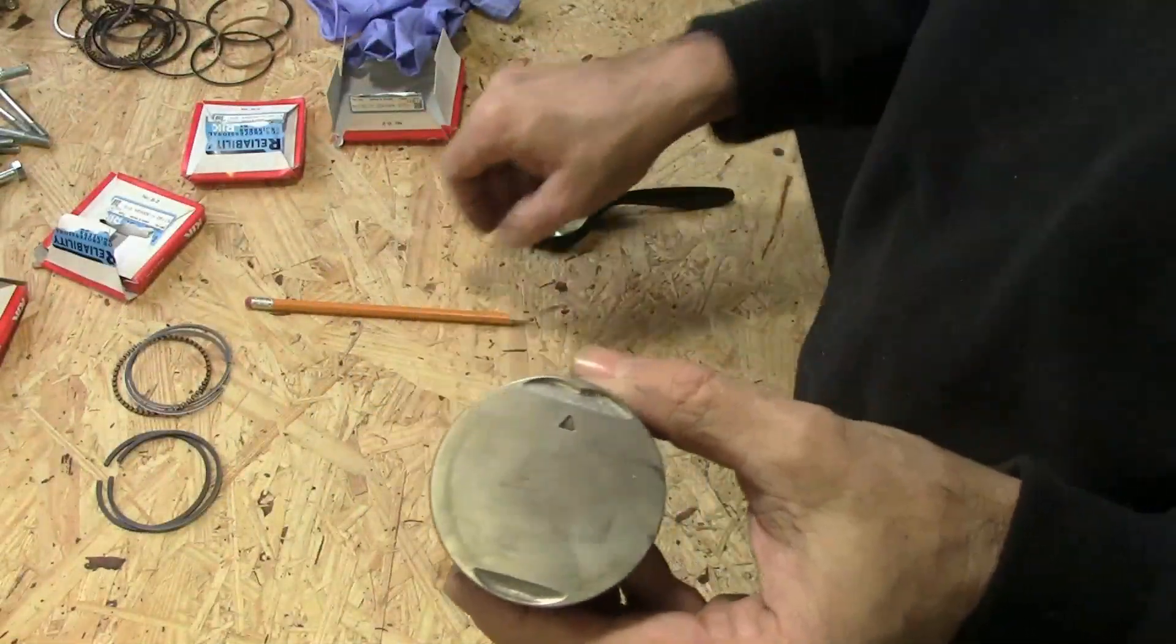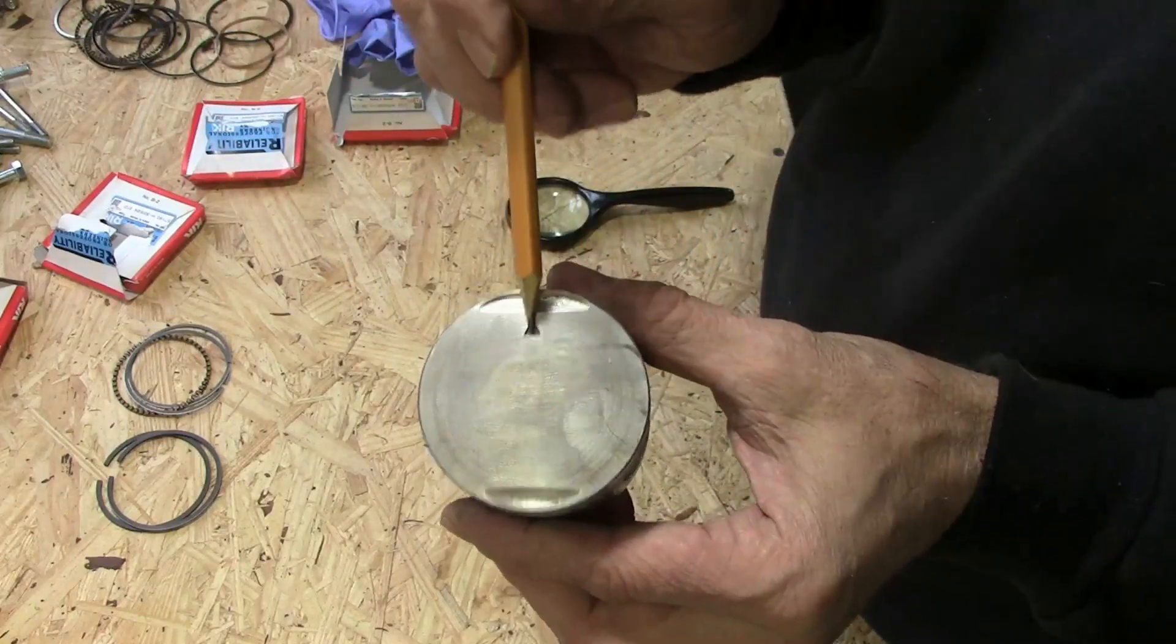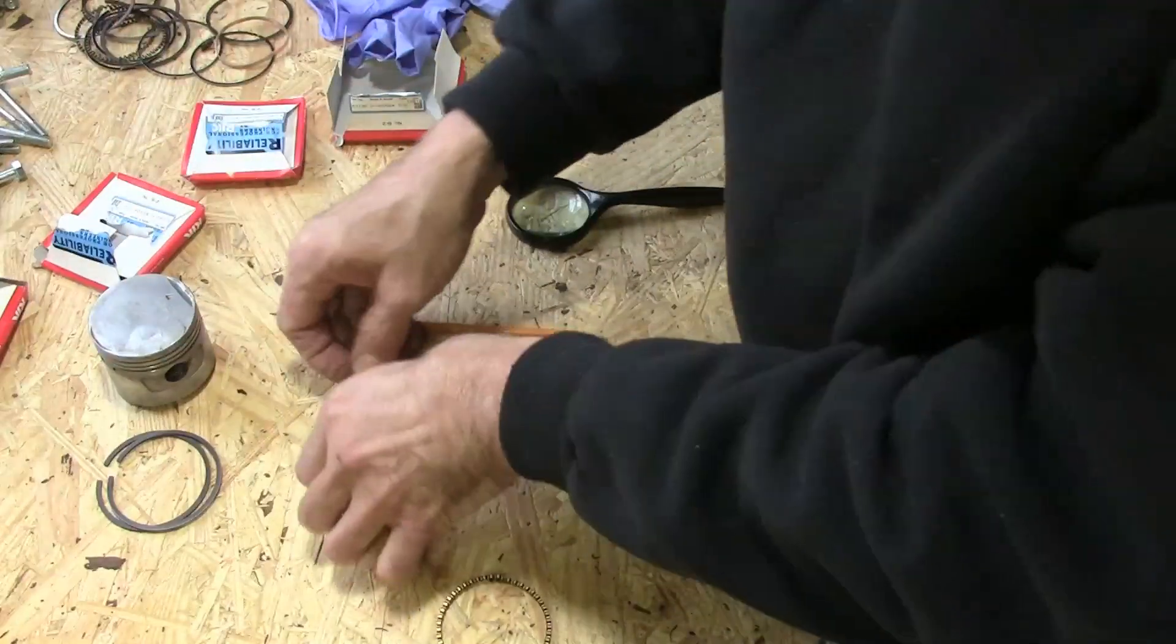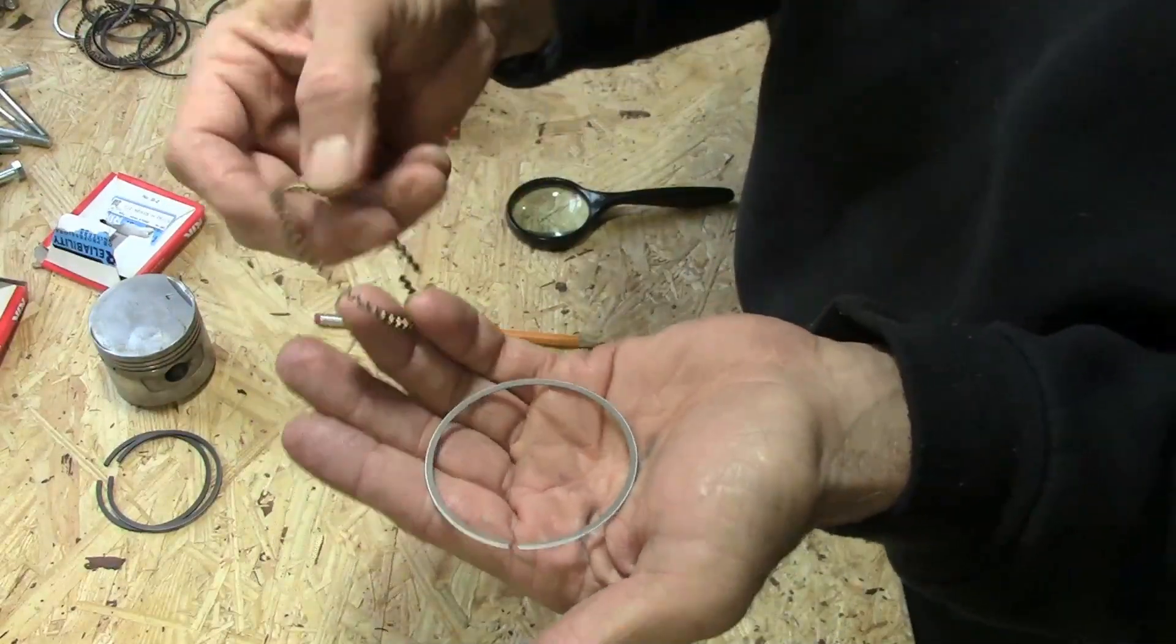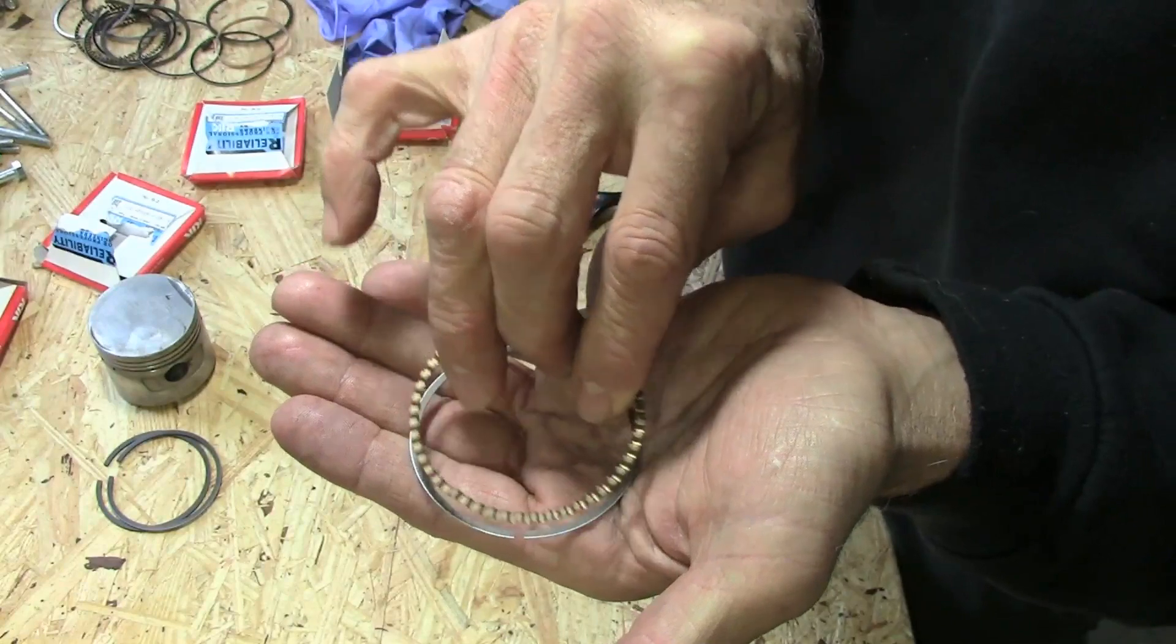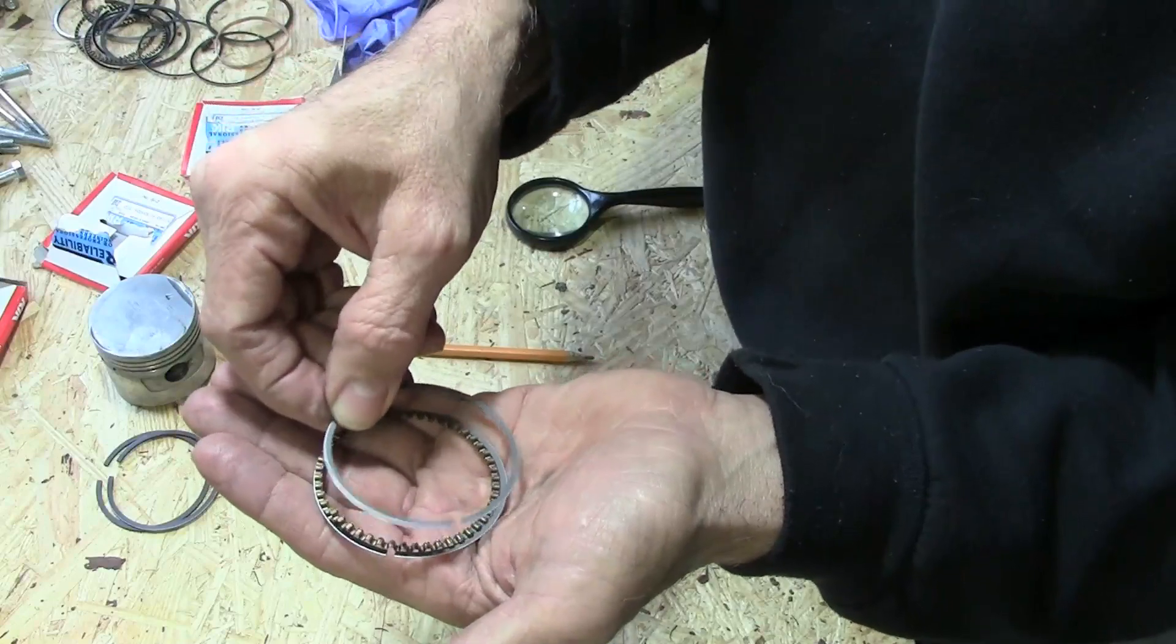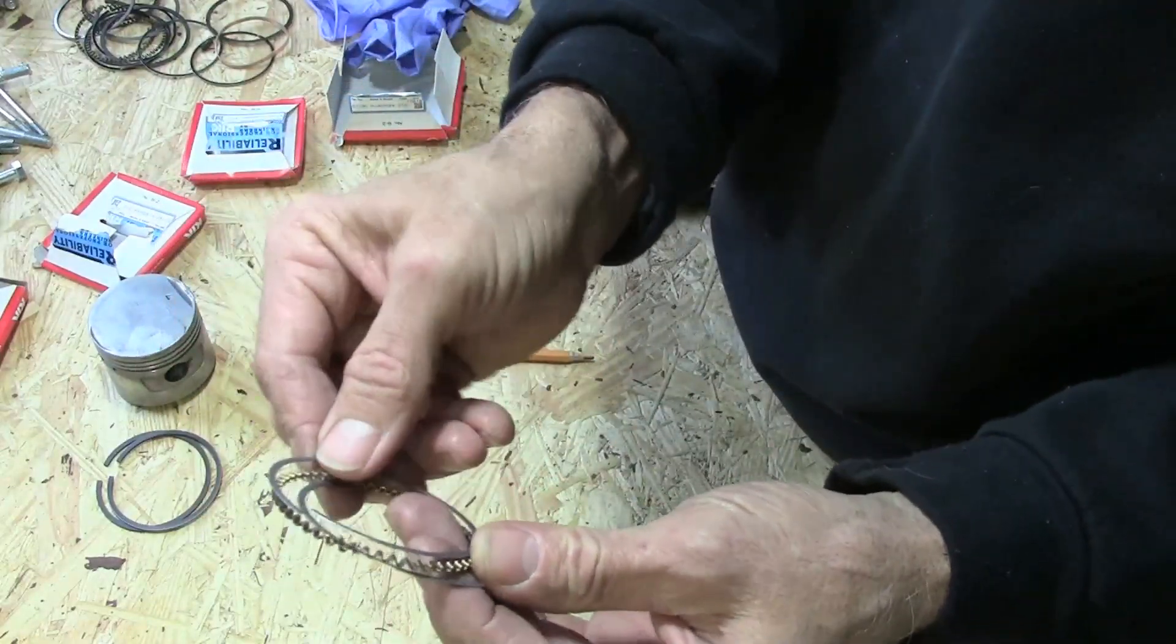When you put these on the piston, you want to space the gaps on the rings about 120 degrees apart. So they'll be like one there, one there, one here. Roughly. And the oil control ring is a bit unique. Because what you'll do with that is you'll have the bottom ring first, and the gap will be like right there. And then the spacer ring, you'll want to put that gap right about there, about maybe two millimeters or two centimeters away from that gap. And then this upper one, we put the gap back over here again. So basically what you're doing is just make sure that the gaps of all of these three rings are staggered apart by about two centimeters.